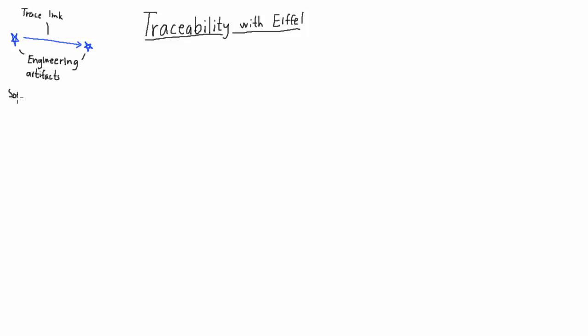Semantic means the link has a specific meaning. In other words, the link doesn't just tell you that two engineering artifacts are related, it also tells you how they are related. And finally, directed means that the link has an explicit direction. It will tell you that it's the test case that verifies the requirement, not the requirement verifying the test case.